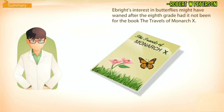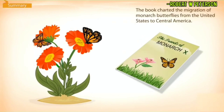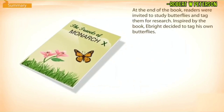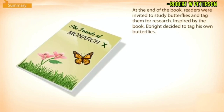Ebright's interest in butterflies might have waned after the eighth grade had it not been for the book 'Travels of the Monarch X.' The book charted the migration of monarch butterflies from the United States to Central America. At the end of the book, readers were invited to study butterflies and tag them for research.